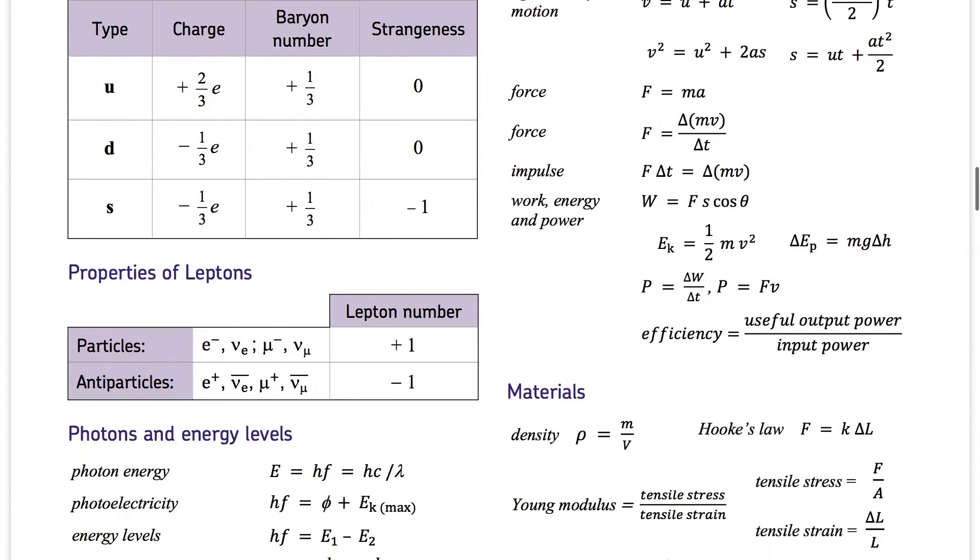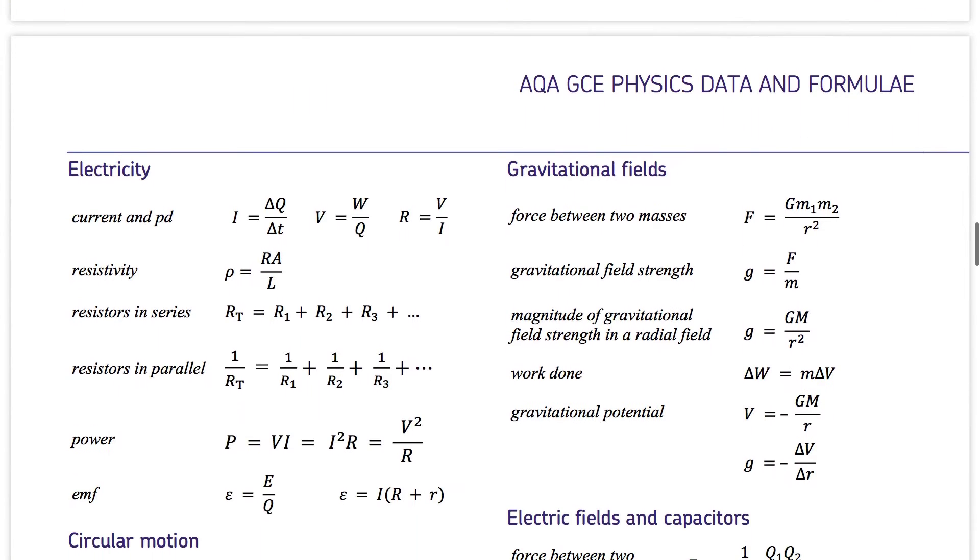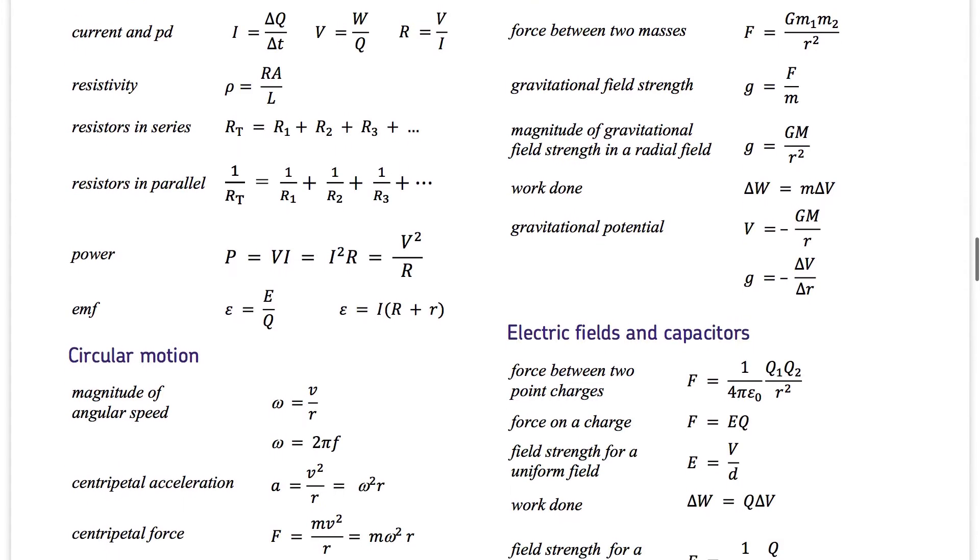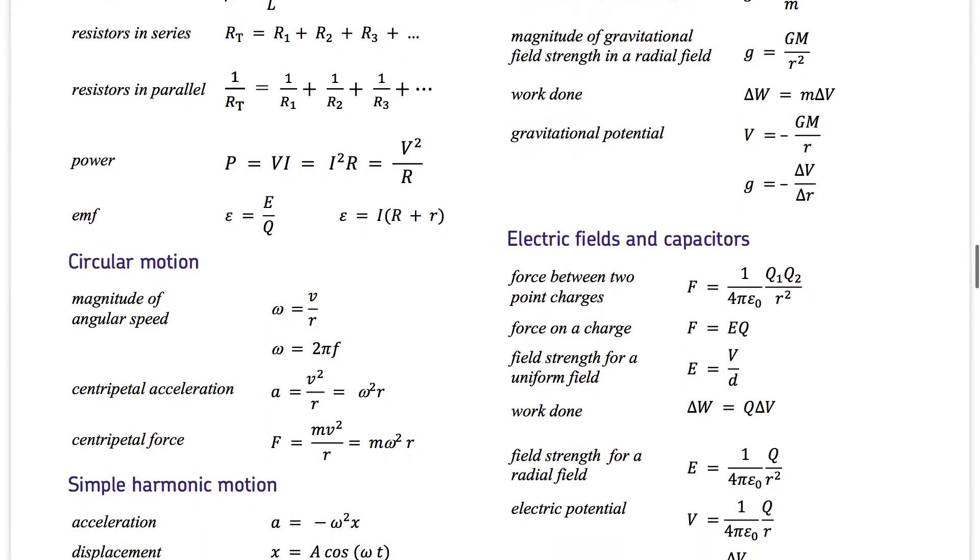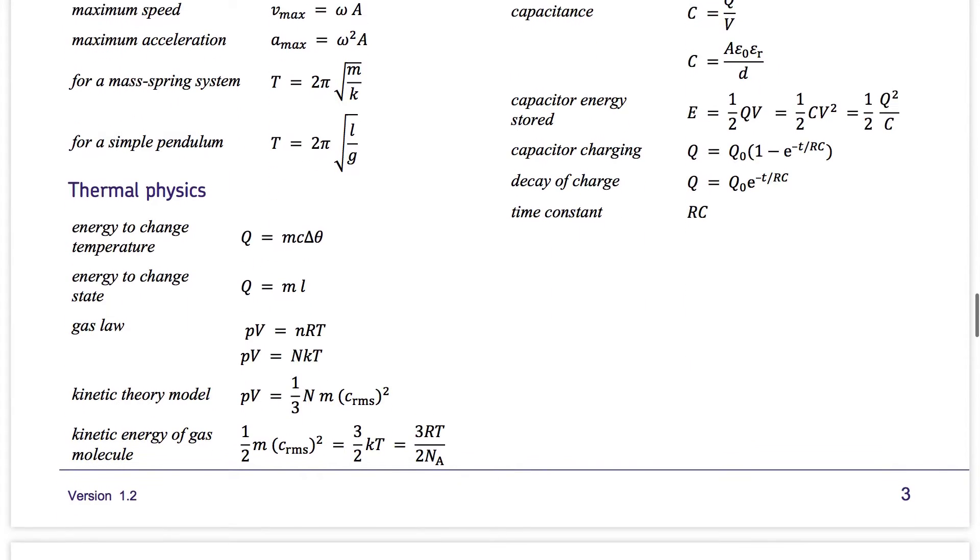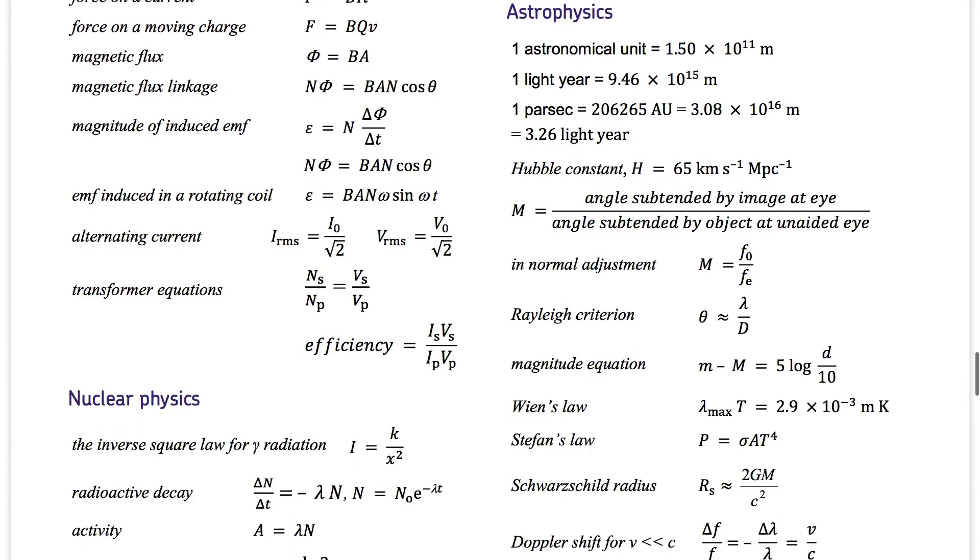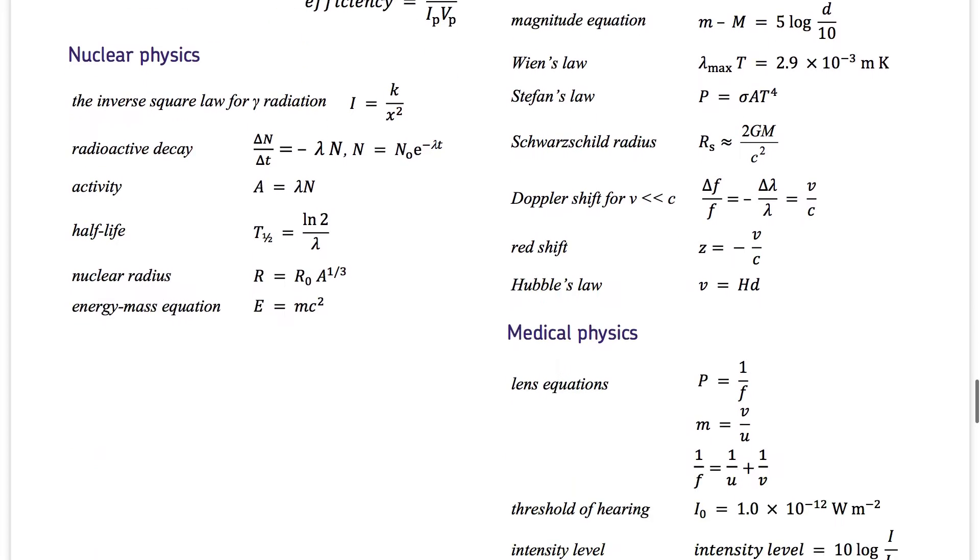You also have properties of electrons, photons and energy levels, gravitational fields and electricity, circular motion, electric fields and capacitors, simple harmonic motion, thermal physics, magnetic fields, astrophysics.